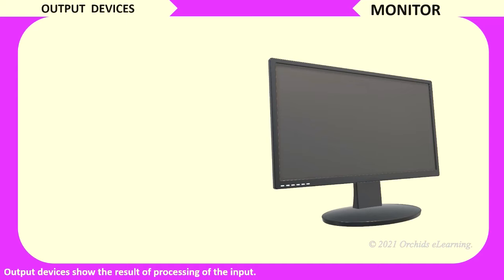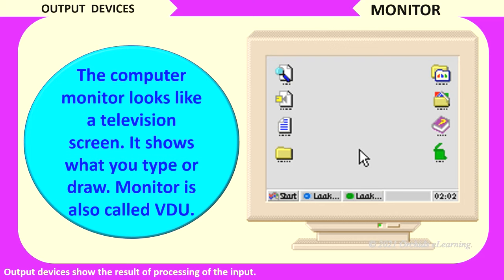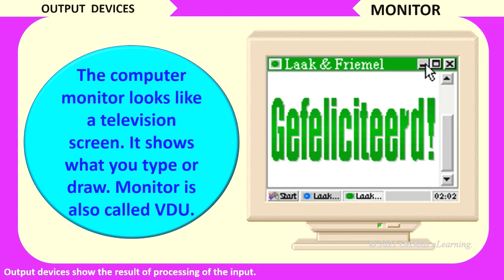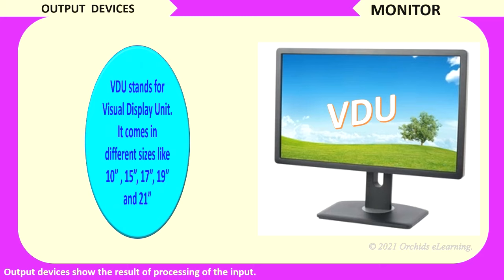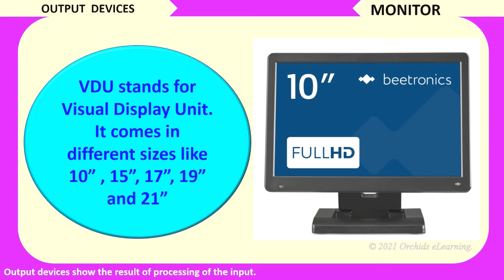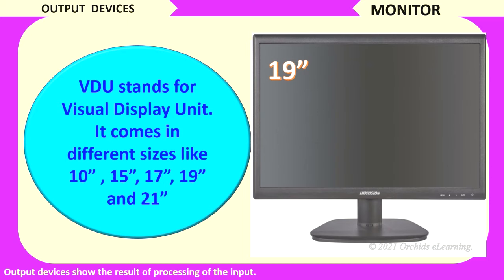Monitor. The computer monitor looks like a television screen. It shows what you type or draw. The monitor is also called VDU, that is, visual display unit. Visual display unit comes in different sizes, like 10 inches, 15 inches, 17 inches, 19 inches, and 21 inches.